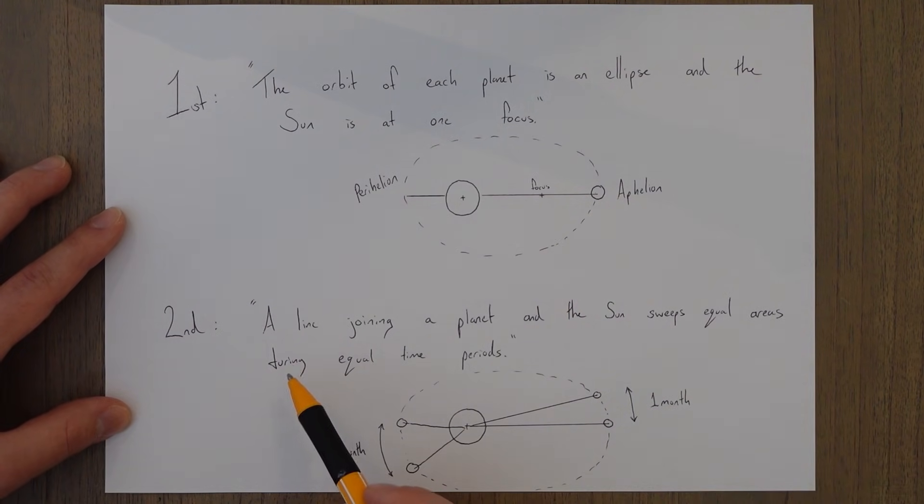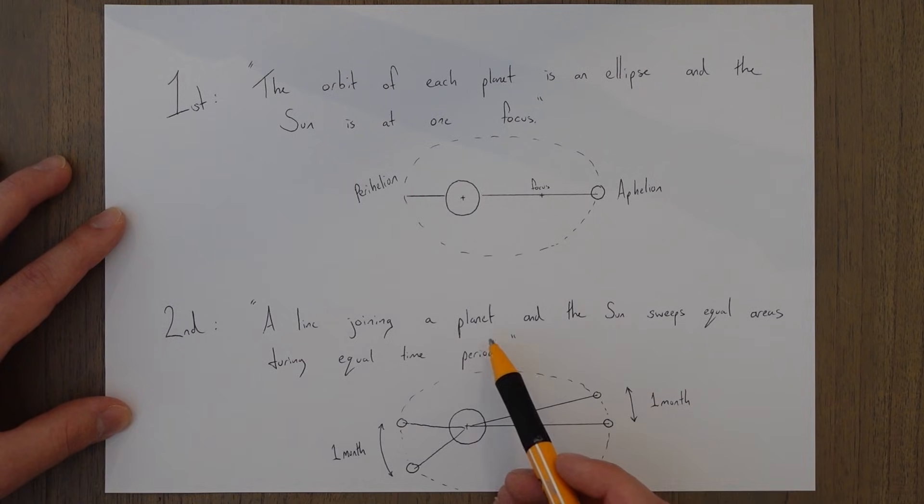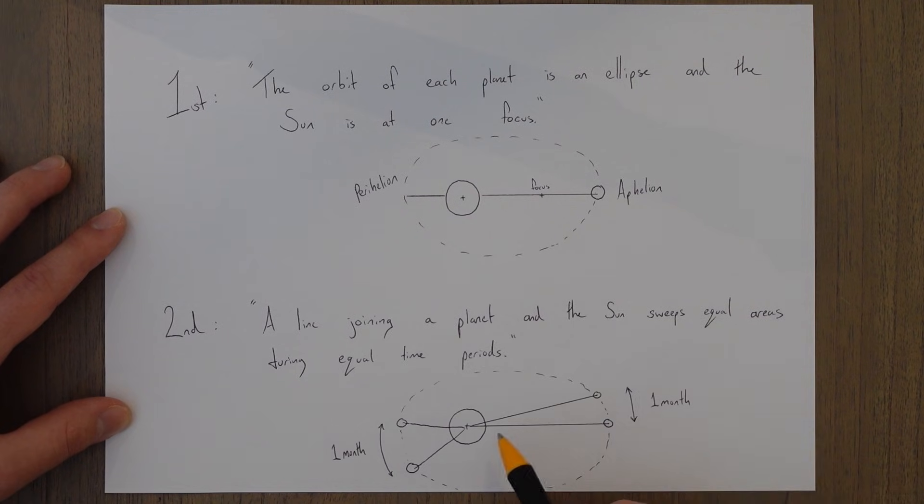Kepler's second law states that a line joining a planet and the Sun sweeps equal areas during equal time periods. Basically what it's saying is this area in here equals this area in here and that means we've got to travel further distance in here to make up for the shorter lines essentially and that means that we actually travel faster when we are closer to the Sun and when we're further away from the Sun we travel slower.